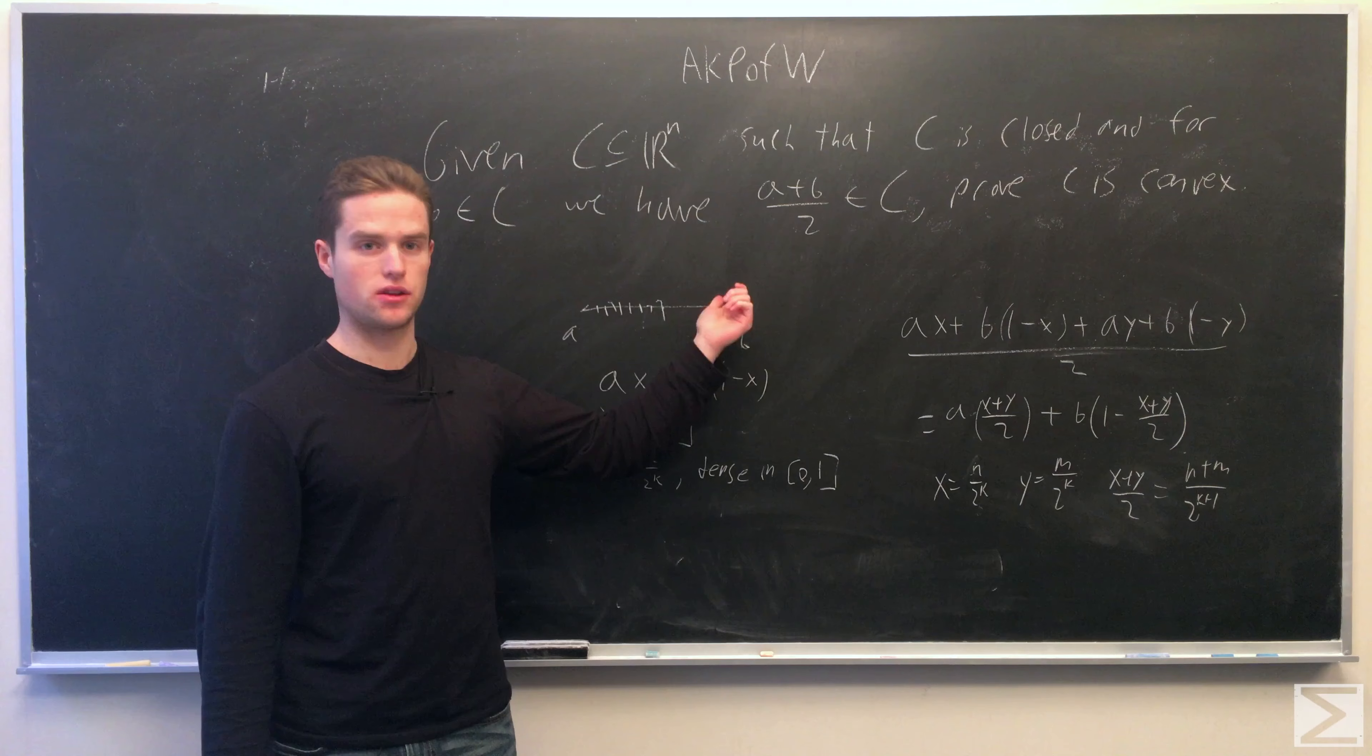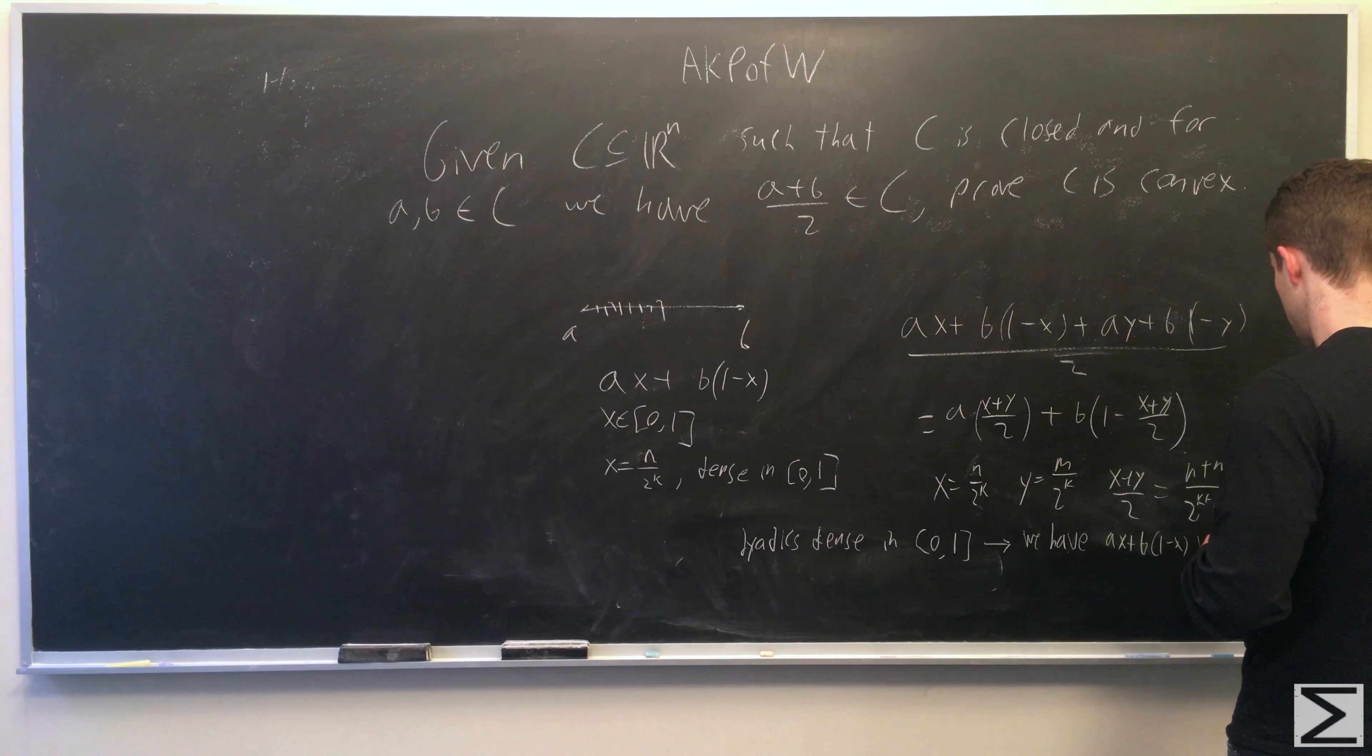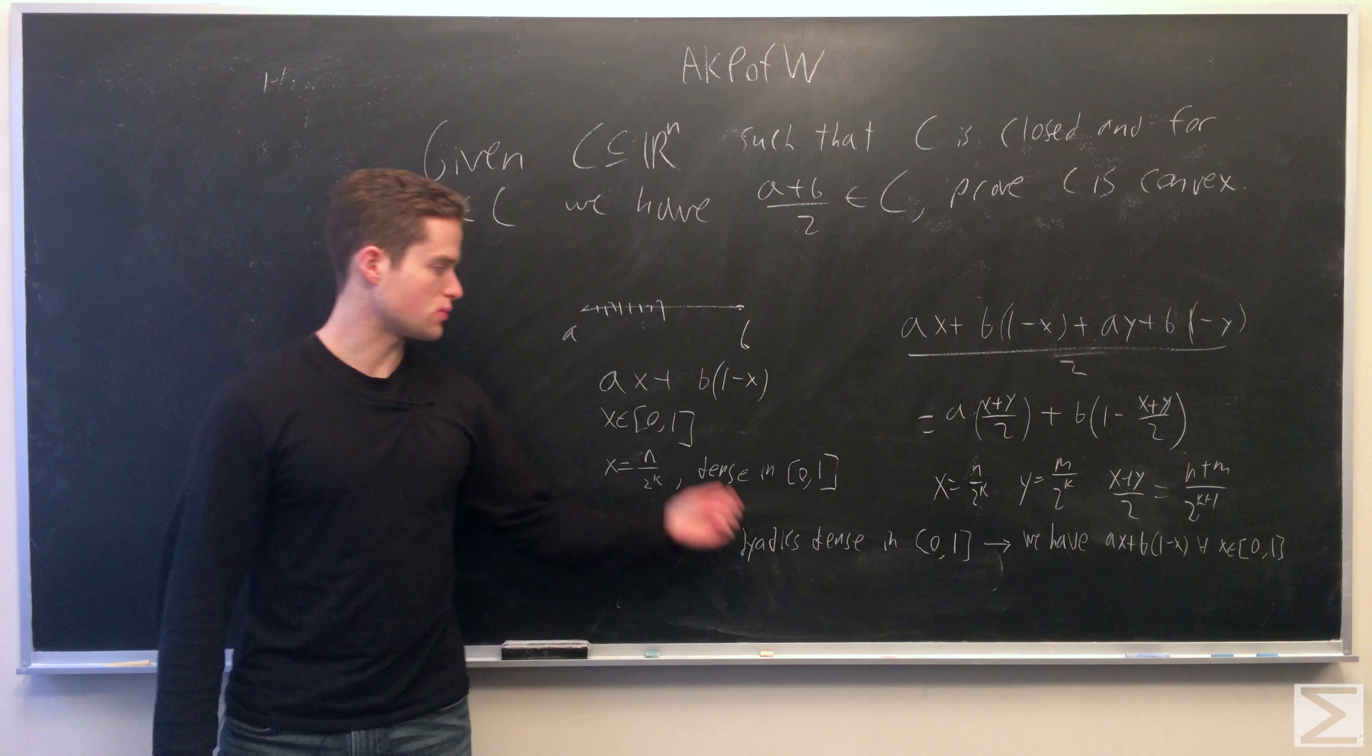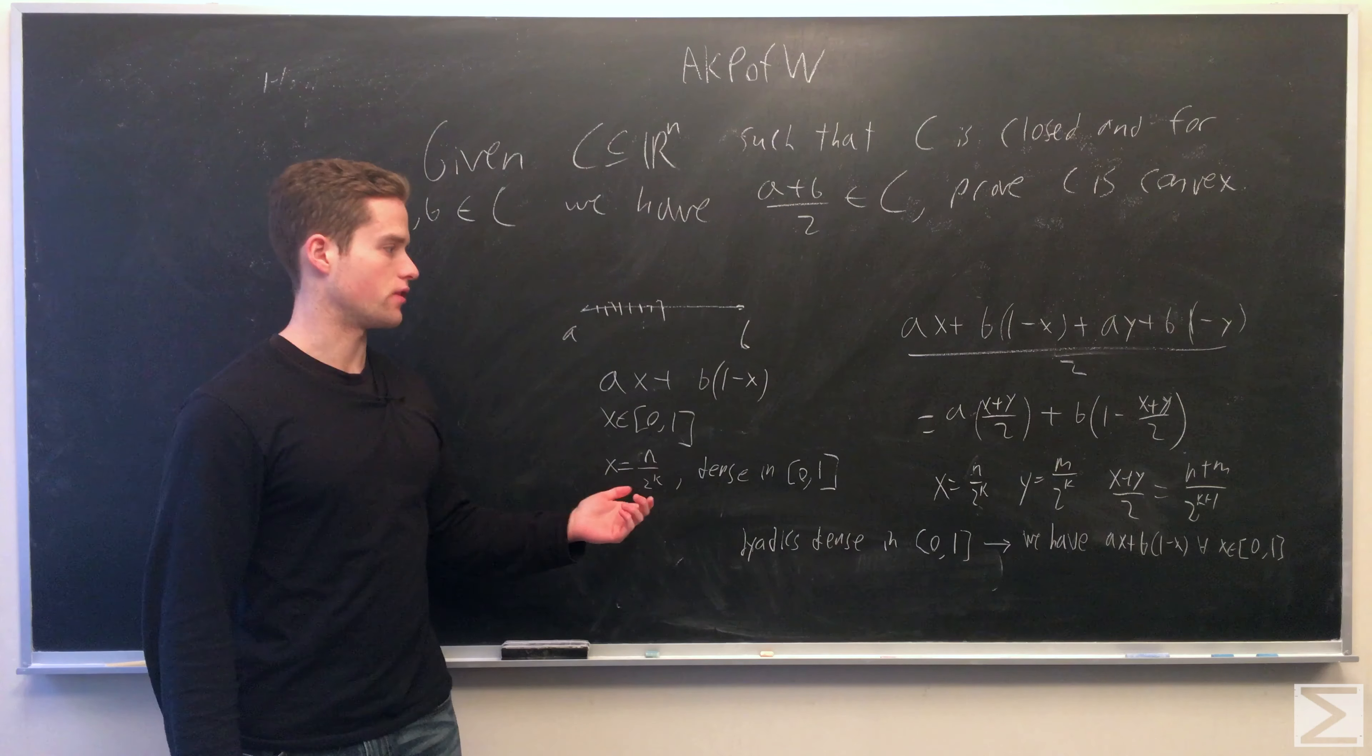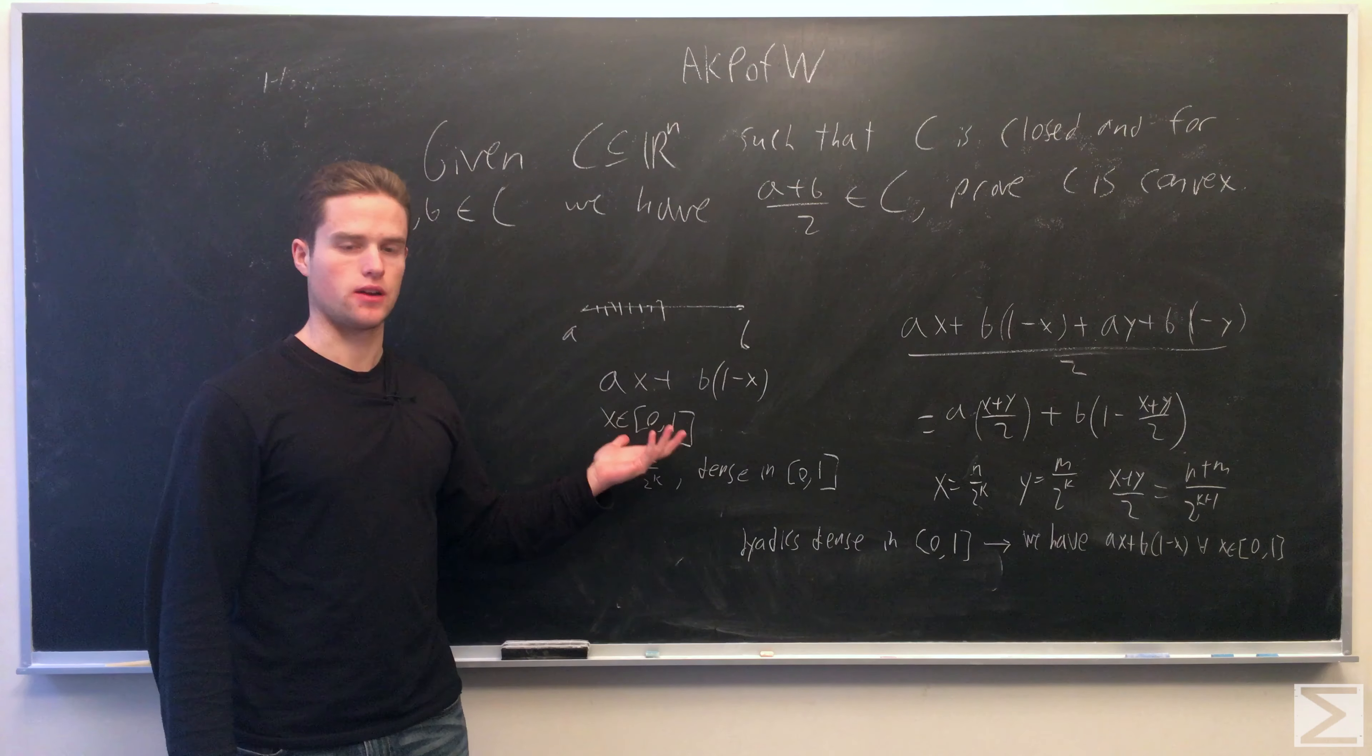And since C is closed, since we've established we in fact have a dense set of possible numbers for x and C is closed, we must have all the possible numbers for x between 0 and 1. And this is exactly a convex set. So now we have all the numbers of the form Ax plus B(1 minus x) for x between 0 and 1 for any A, B in C. And so this is what a convex set is.